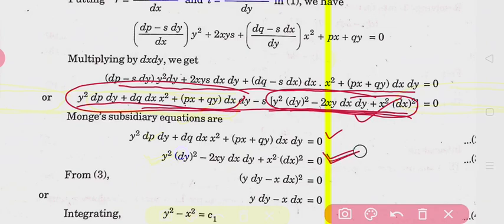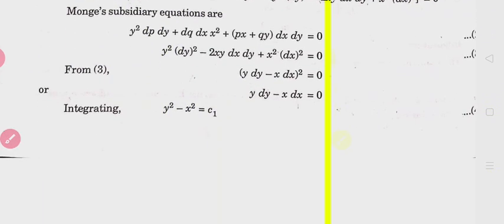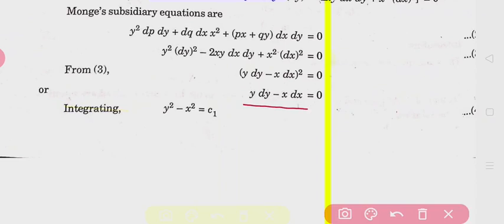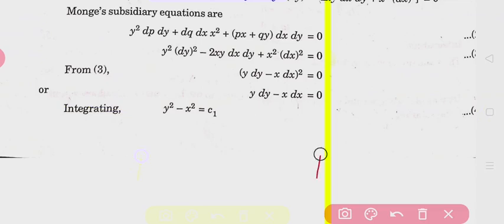We call these the Monge subsidiary equations. Factorizing: if we call y·dy as a and x·dx as b, we get a² + b² - 2ab, which is the formula for (a - b)², so (y·dy - x·dx)² = 0. Both factors are the same: y·dy - x·dx = 0. Integrating gives y²/2 - x²/2 = constant, so y² - x² = c₁.